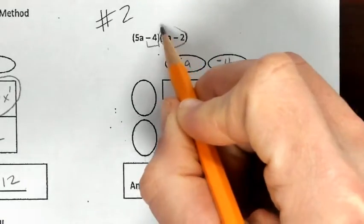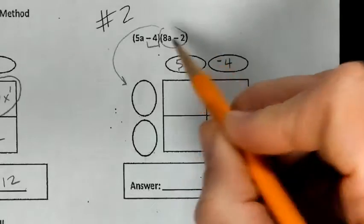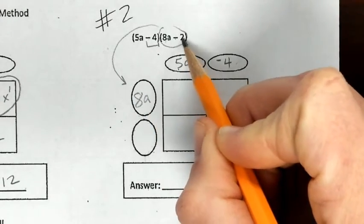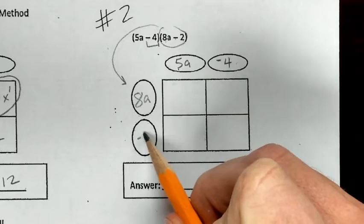Now I'm looking at this binomial and I'm putting it in the side two boxes. So the first term is 8a, and then the operation and the next term, negative two.